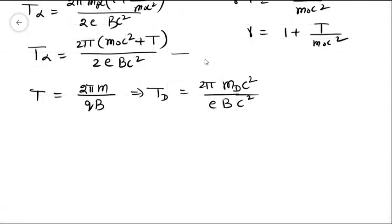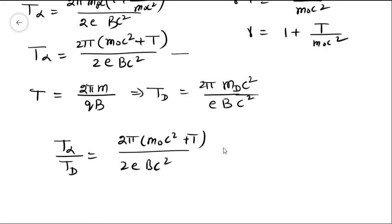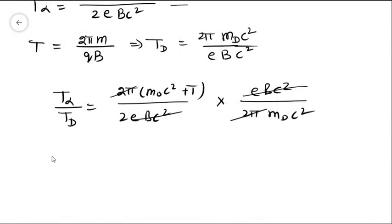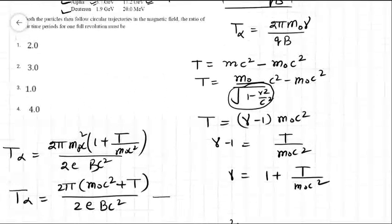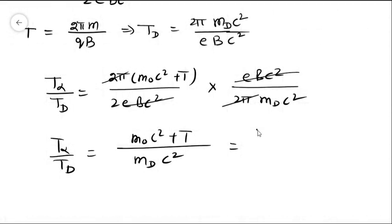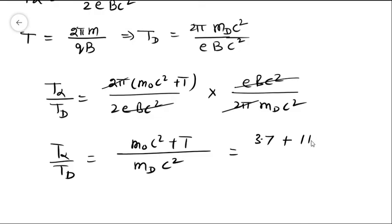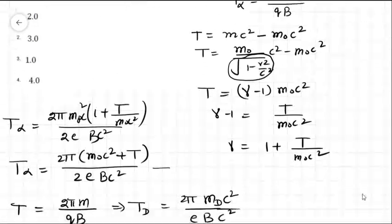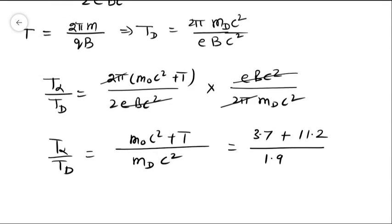What will be the ratio? The ratio turns out to be T_alpha over T_d equals (M₀c² plus T) over (Mdc²). And M₀c² for the alpha particle is 3.7 GeV plus T is 11.2 over rest mass energy of the deuteron is 1.9 GeV.